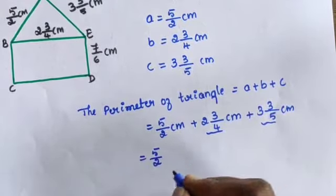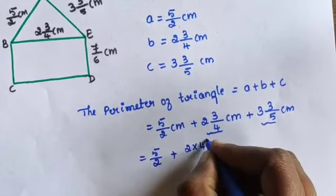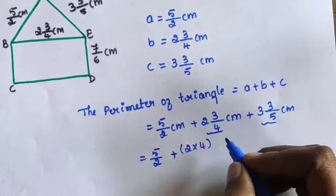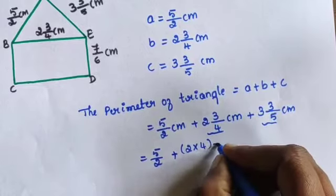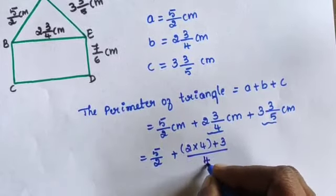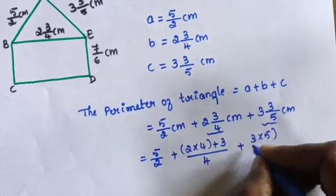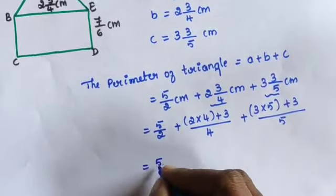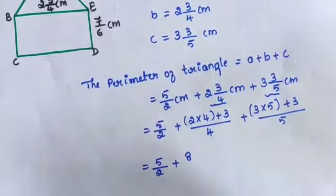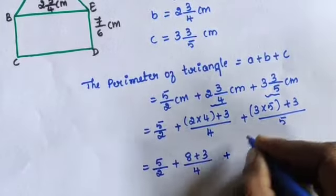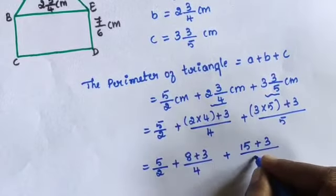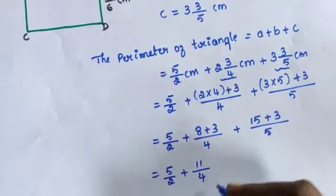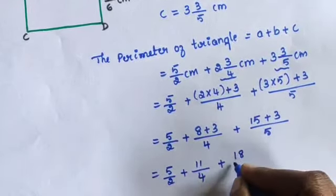Converting: 5/2 plus (2×4 + 3)/4 plus (3×5 + 3)/5. That gives 5/2 plus 11/4 plus 18/5. These fractions cannot be added directly because the denominators 2, 4, and 5 are different. Find the LCM of 2, 4, and 5.